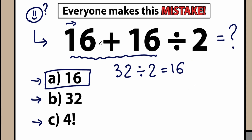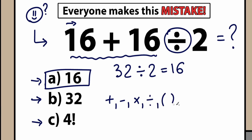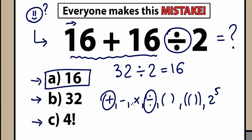But the main question is: right here we solved this question randomly — we just added first. For example, if we divide it first, we have an absolutely different answer. This is a very important thing in terms of math. When we have a complicated expression with addition, subtraction, maybe multiplication, division, parentheses, inner parentheses, or powers like 2 to the power 5, we need to order all of this according to math laws and math properties.